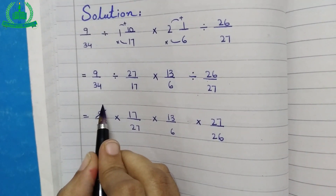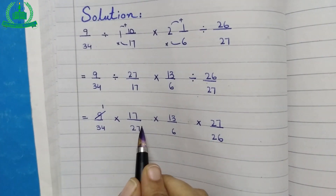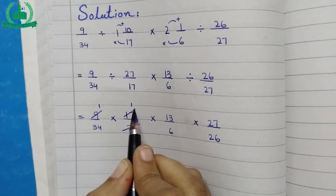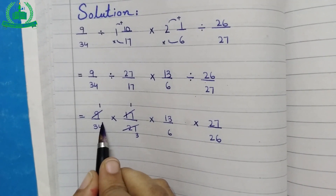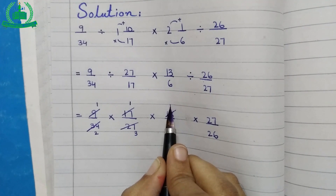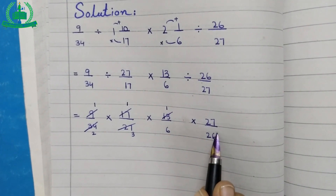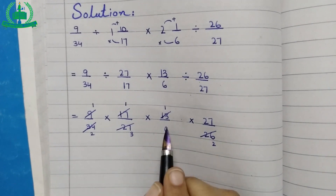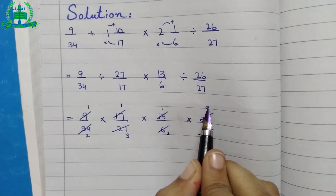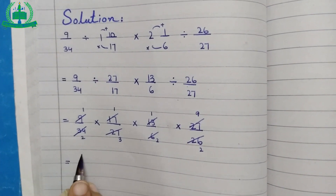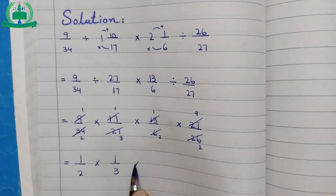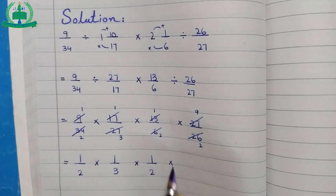9 multiplied by 1 equals to 9. After cross multiplication and simplification, this step equals to 1 upon 2, multiply 1 upon 3, multiply 1 upon 2, multiply 9 upon 2.